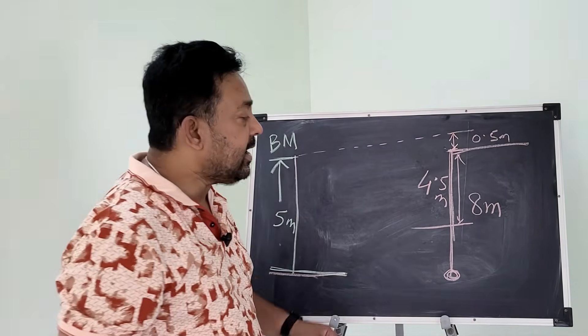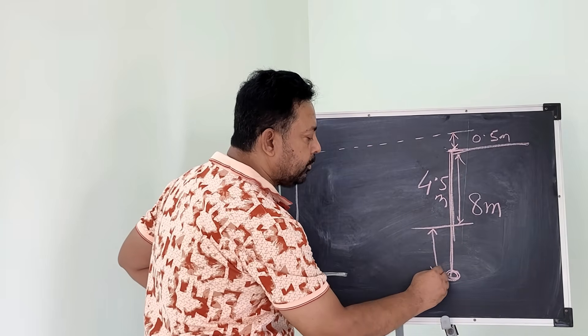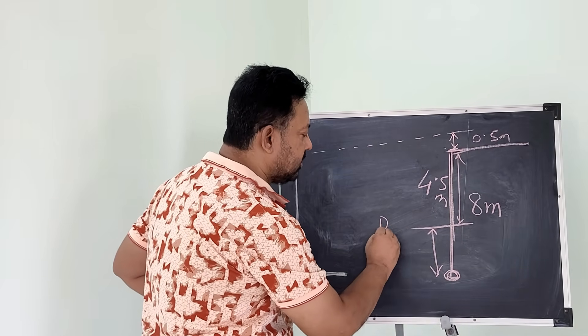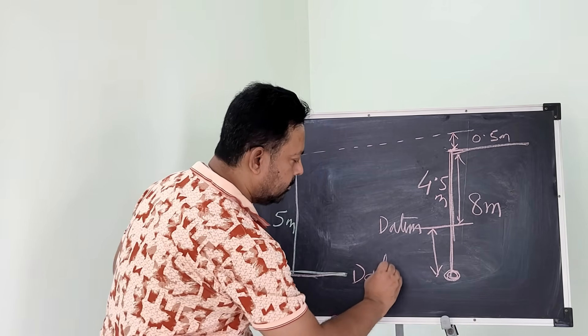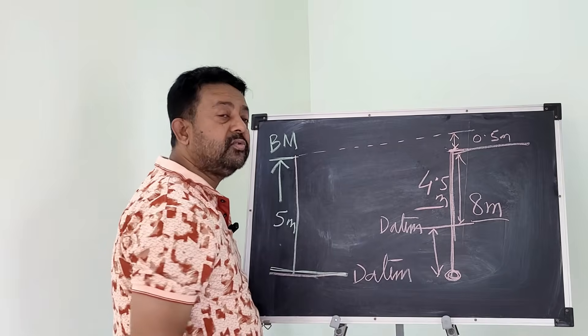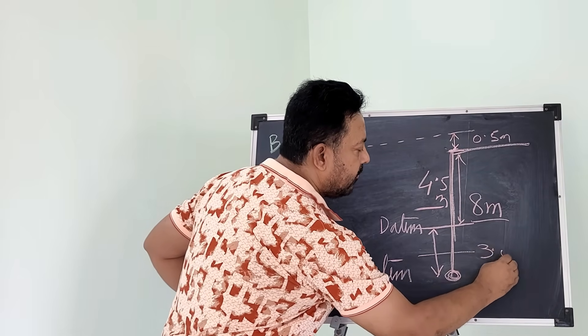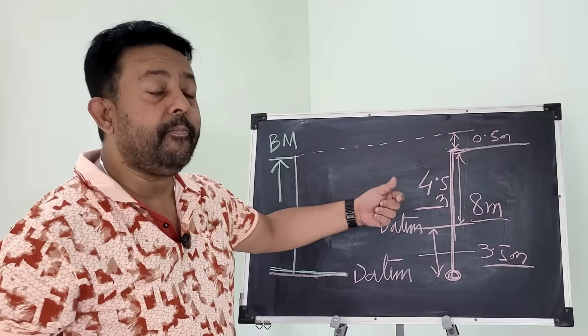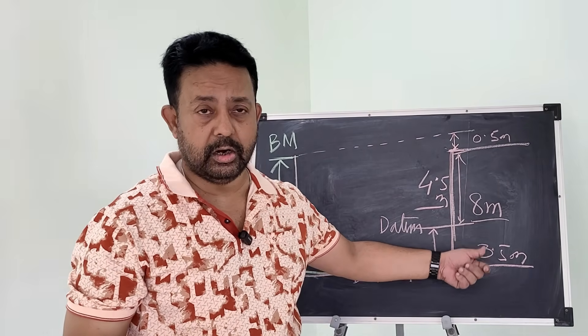So if I know that, then I need to find out where is my sensor with respect to my datum. This is datum, and this is also datum. Okay, so 8 meters minus 4.5 meters, and that will become 3.5 meters. So I know that from the datum, the zero of my tide gauge is three and a half meters down.